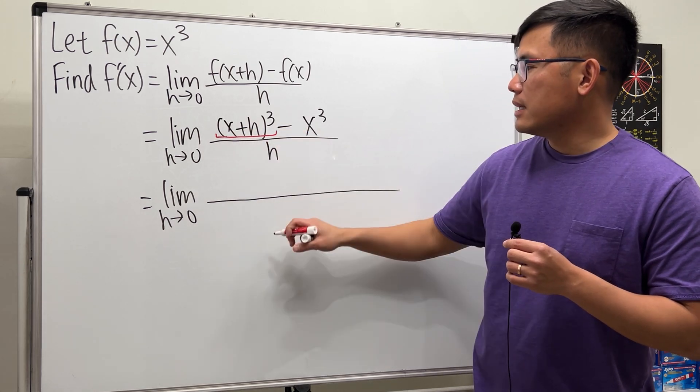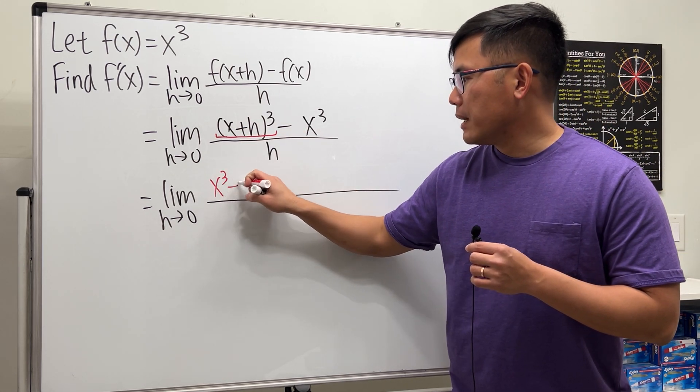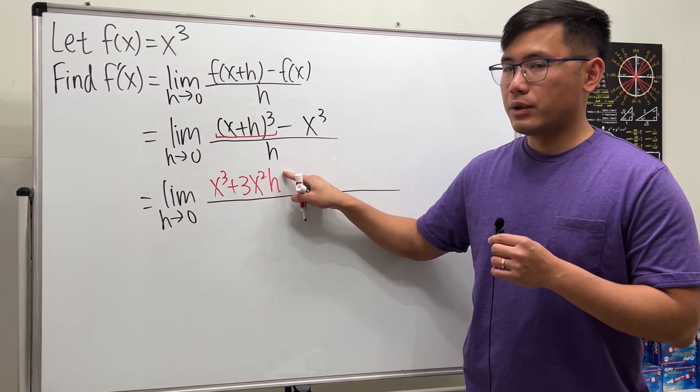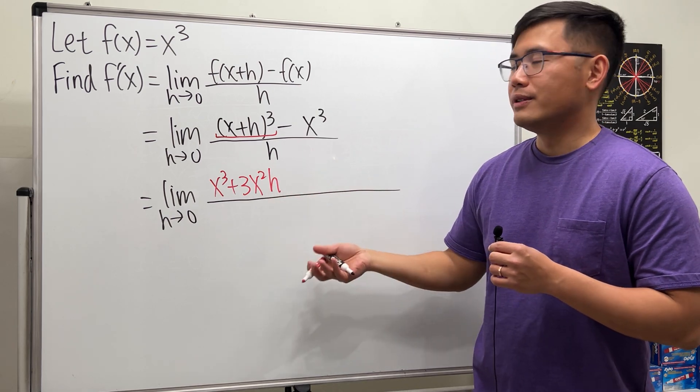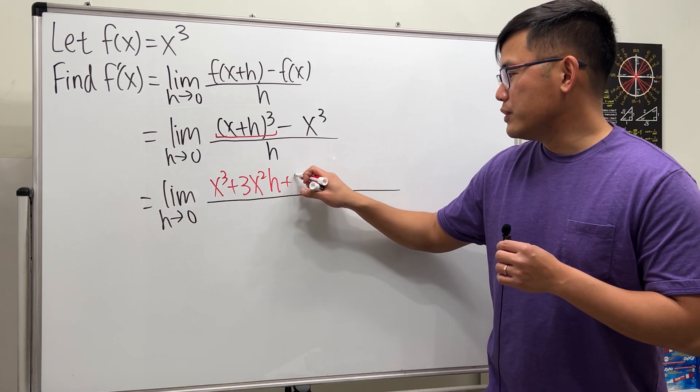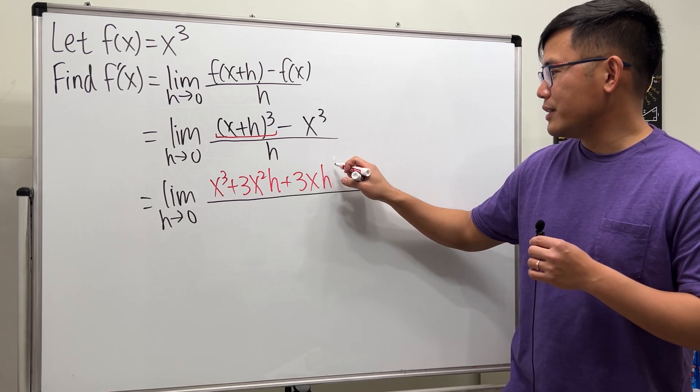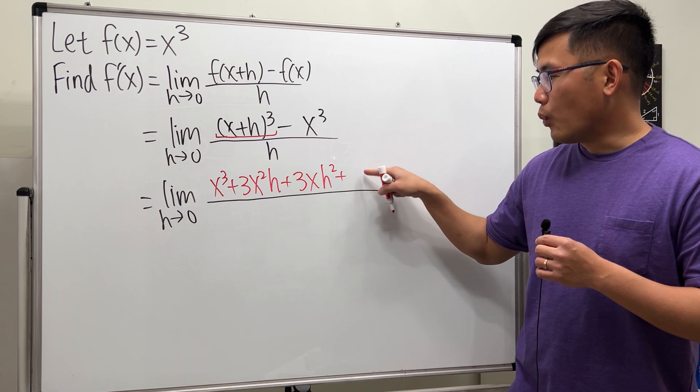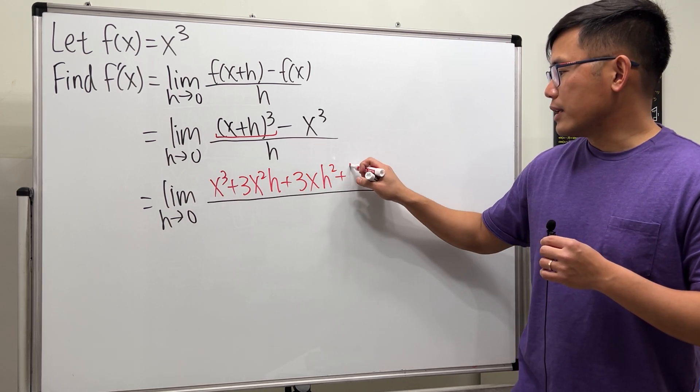All right, so I'll tell you guys that we will get one times x to the third power, plus three times x square and h to the first power. You see that the powers of x will be going down and then you will just put more h. So the next one is coefficient three and then x first power, and then you put an h there so h squared. Now lastly, plus one for the coefficient, no more x, and then you put another h, so h to the third power.